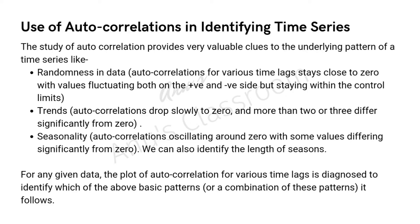That is finding a correlation between different data of the same series taken at different time intervals with each other. The study of autocorrelation in such time series will help us identify the randomness in data, any trends or seasonality, and we can also identify the length of such seasons in case there is a seasonality. For any given data, the plot of autocorrelation for various time lags is diagnosed to identify which of the basic patterns — purely random, trends, seasonality, or a combination — the data follows.